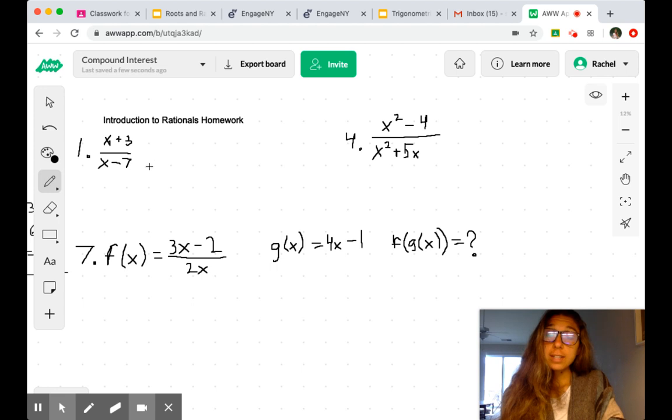So we look at the denominator and say to ourselves, well, what value for x is going to make this true? And this is true when x equals 7.